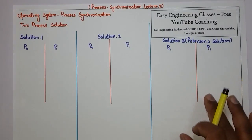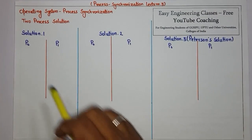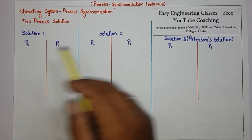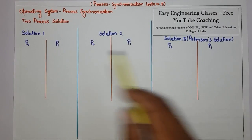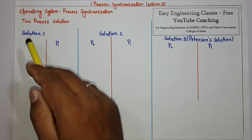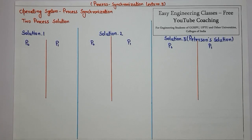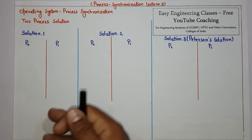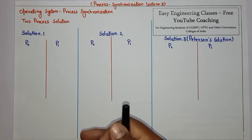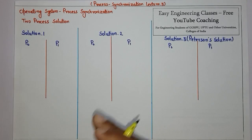Now we will see some of the solutions proposed by authors in the past. In this video we are going to see three solutions of the two process solution problem. We will go through the code of each solution one by one and then analyze the solution itself.